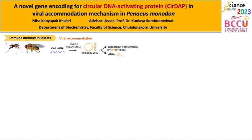These fragments are called endogenous viral elements or EVE, and they can also give rise to small interfering RNA for further processing in RNA interference, leading to viral RNA degradation. This serves as the long-term memory for a specific immune response for the next time of infection.